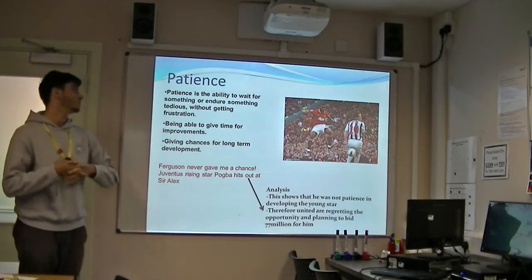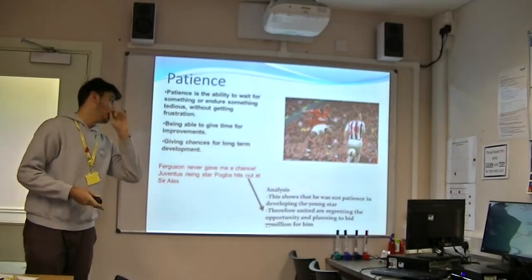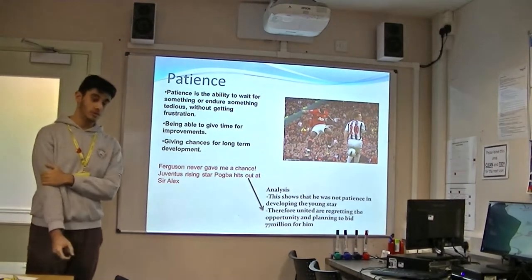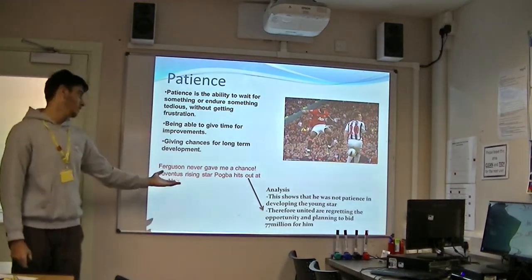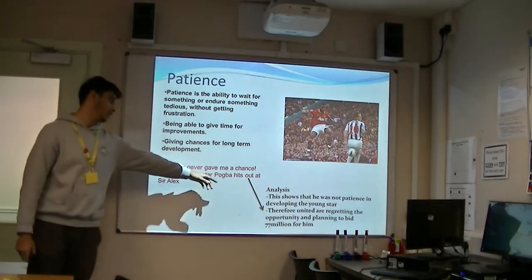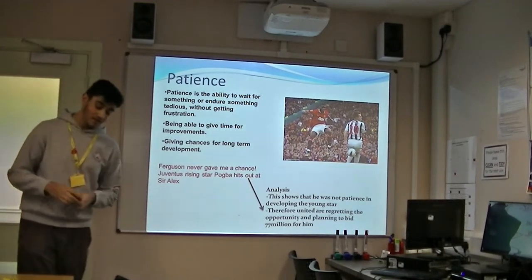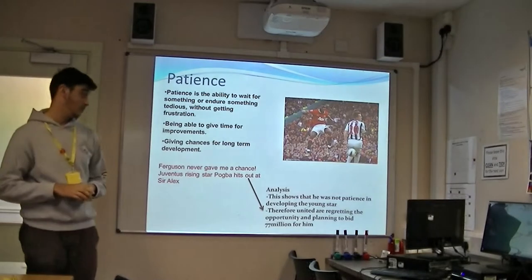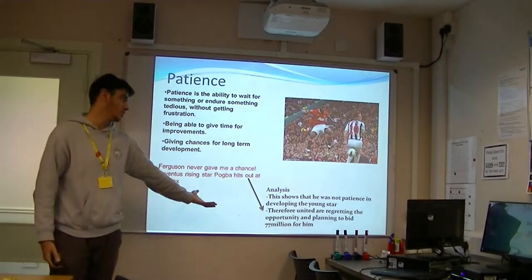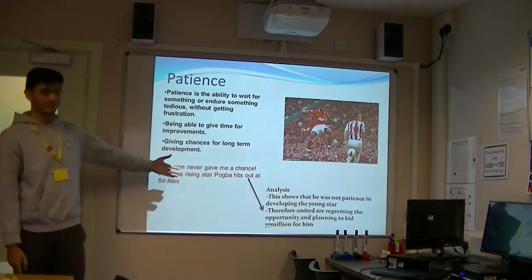Patience. Patience is the ability to wait for something, to endure something tedious without getting frustrated. The coach is able to give time for improvement and give players a chance for the long term. This is a huge disadvantage — he never gave the player a chance to start playing. This shows that he wasn't patient enough in developing some young potential players, giving them time for development over 12 games. Therefore, Manchester United are getting the opportunity and are planning to bid 77 million for a player that they sold for free to Juventus.